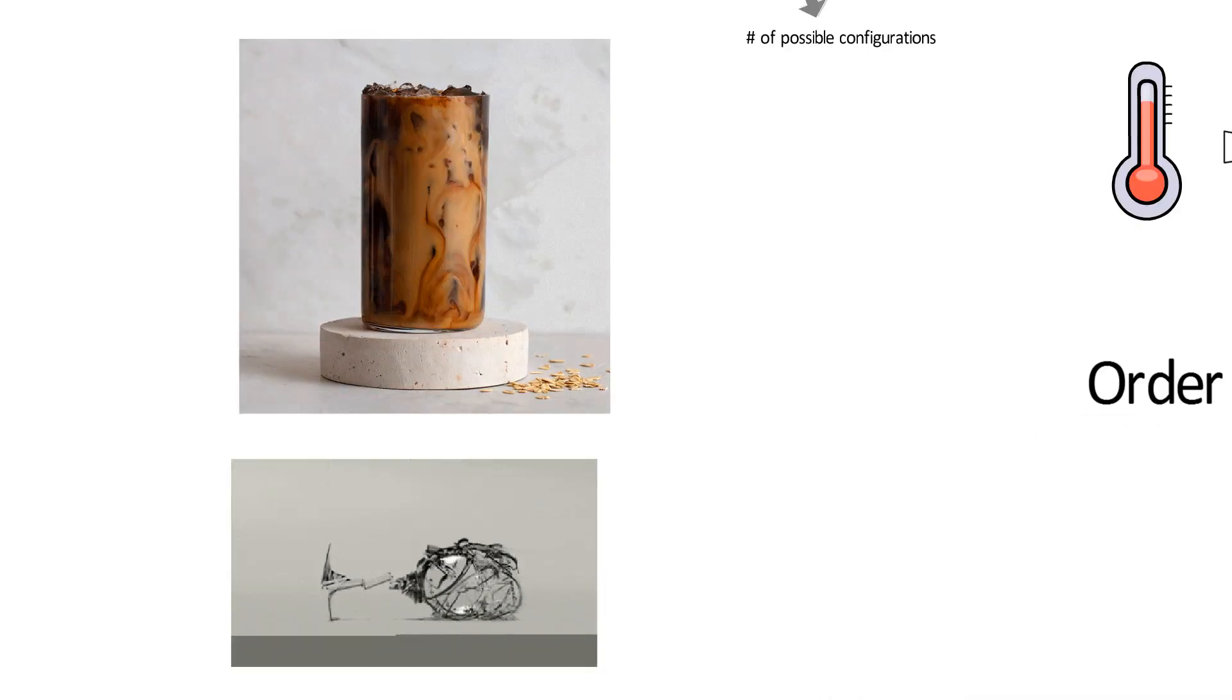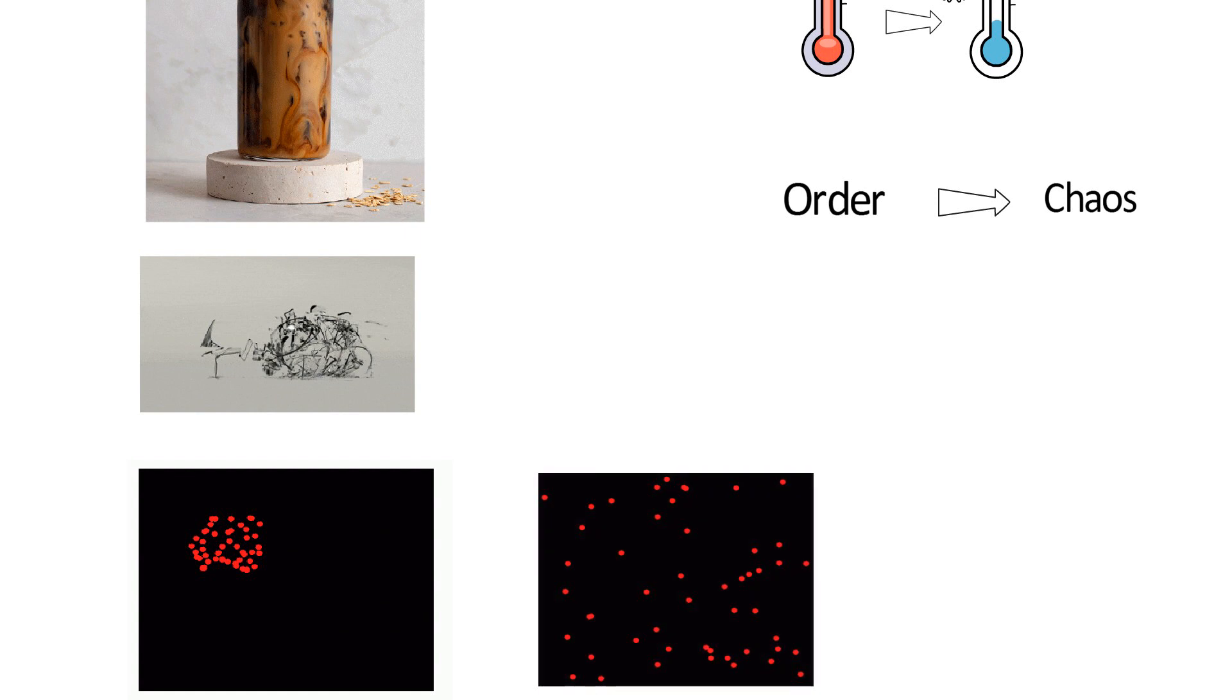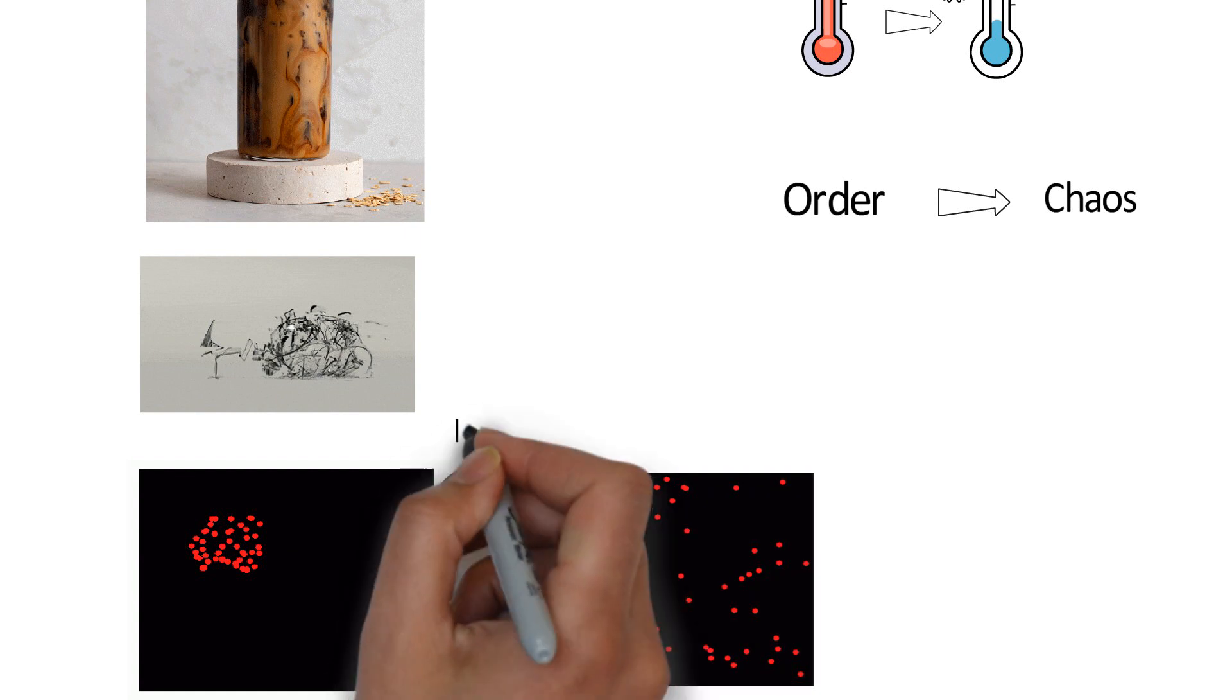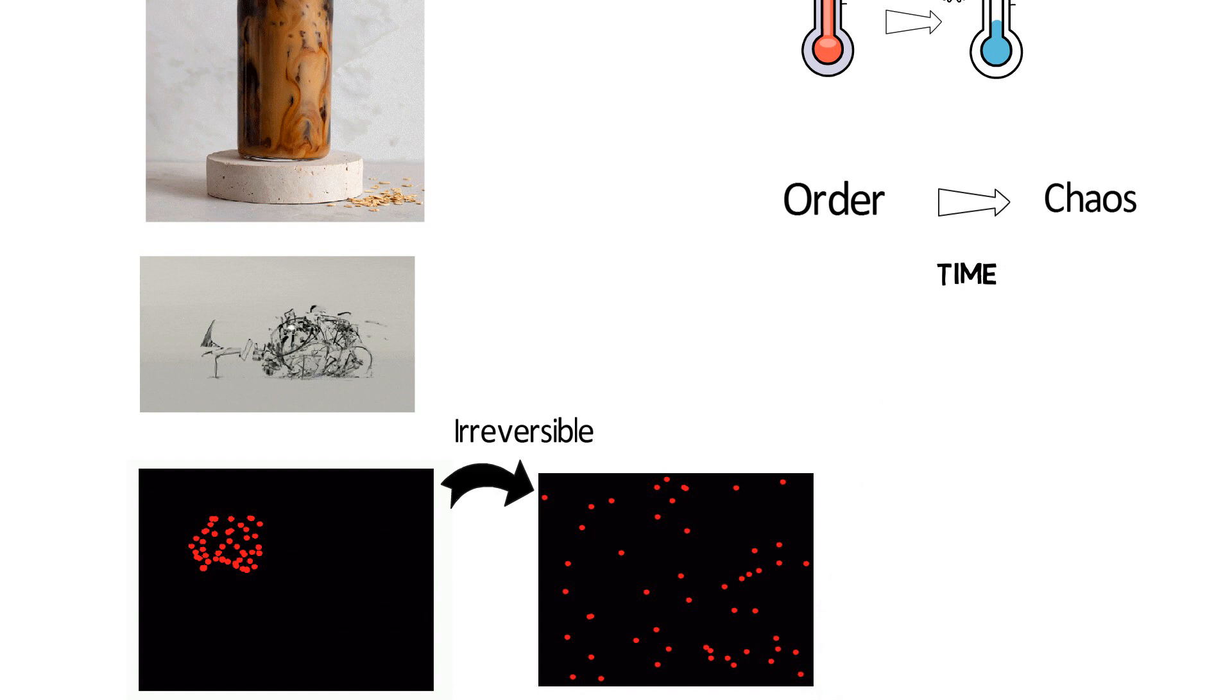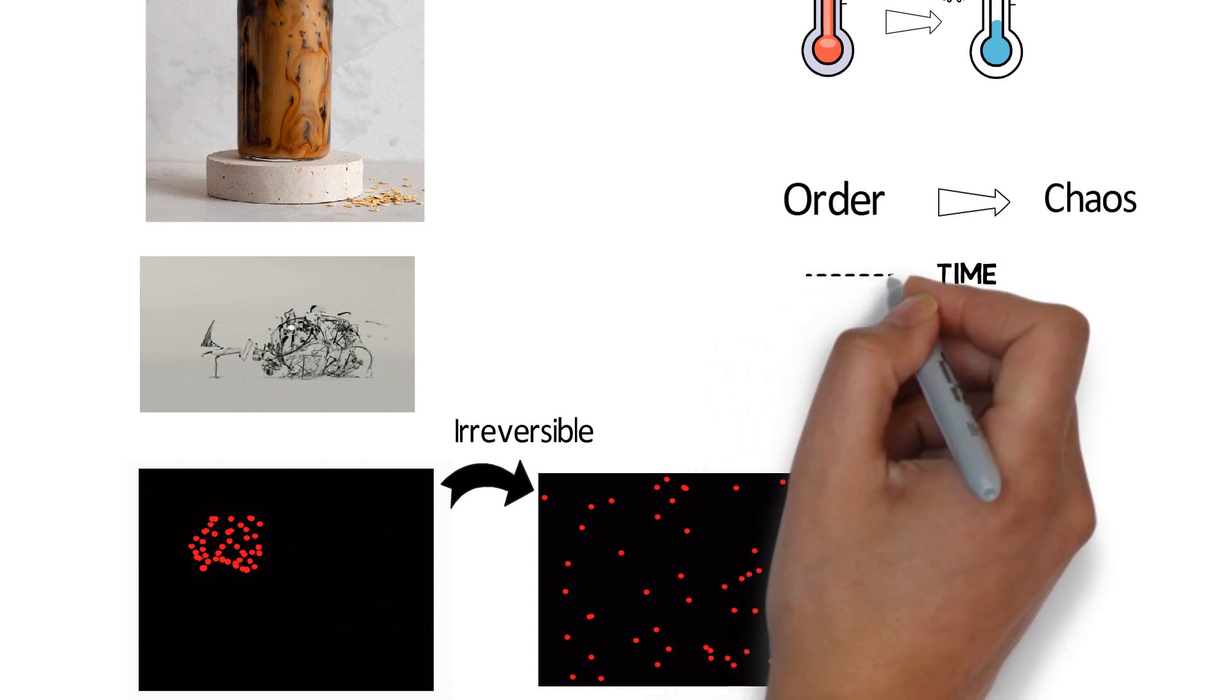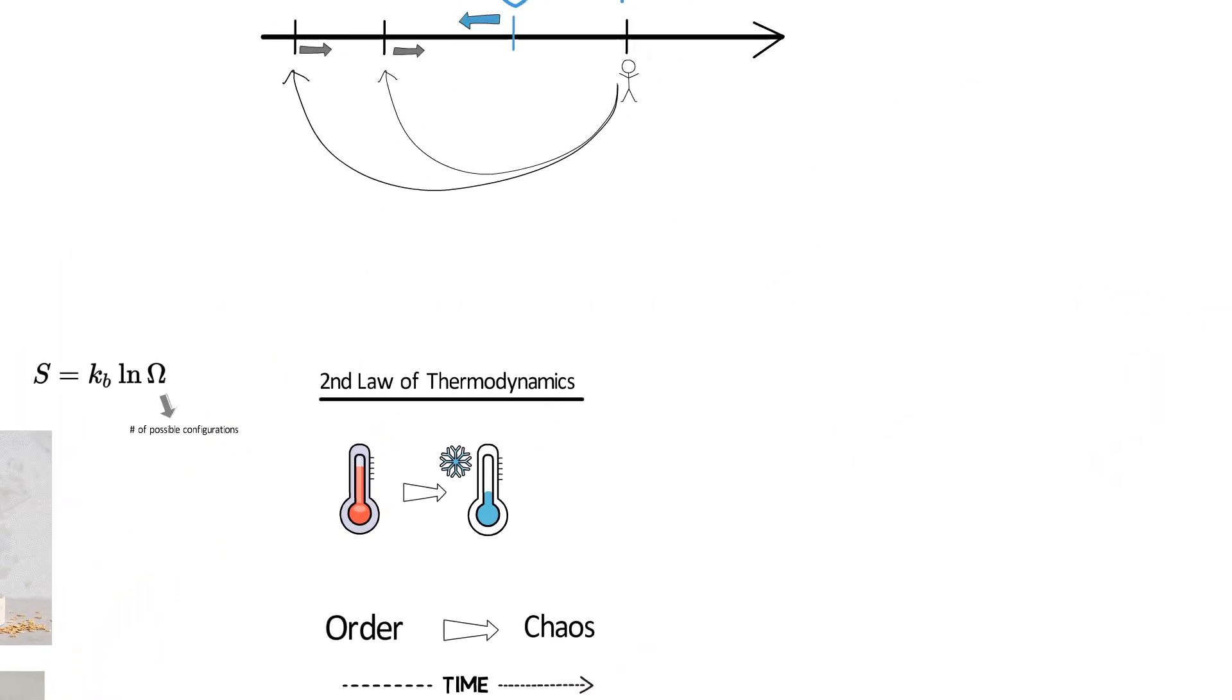And we can see this from phenomenon such as creams blend into coffee, glass shattering, and air particles diffusing in a contained space. We don't ever see these things go in reverse. So then what's significant about the second law of thermodynamics is that it kind of informs the arrow of time and tells you which direction time is traveling.